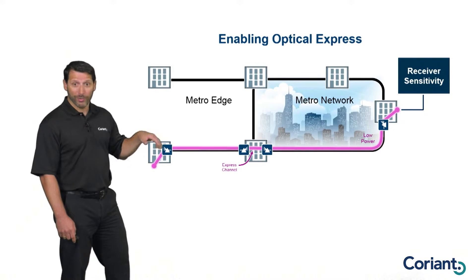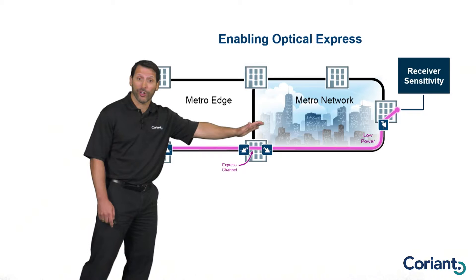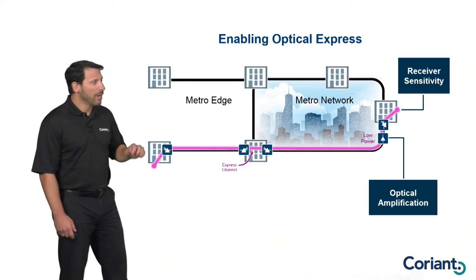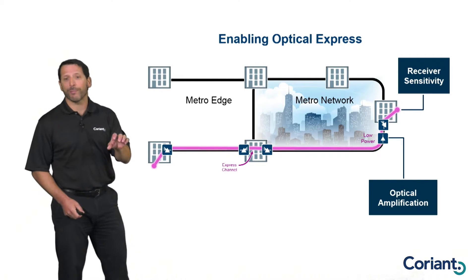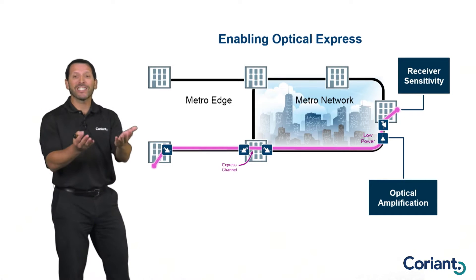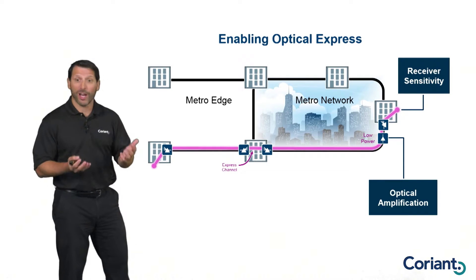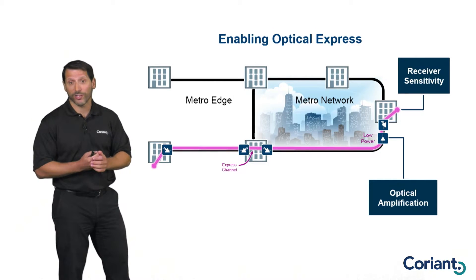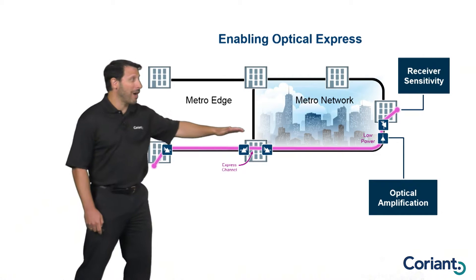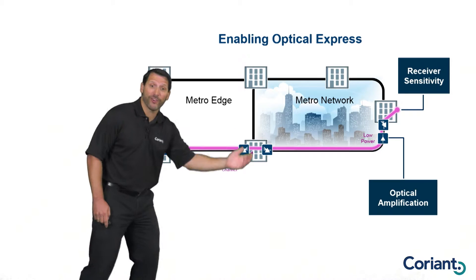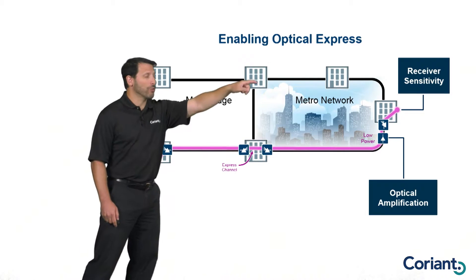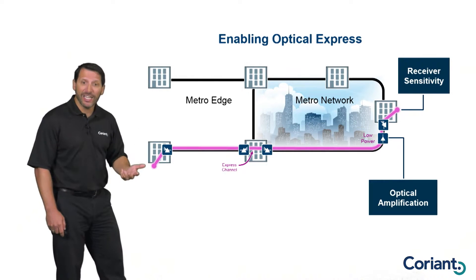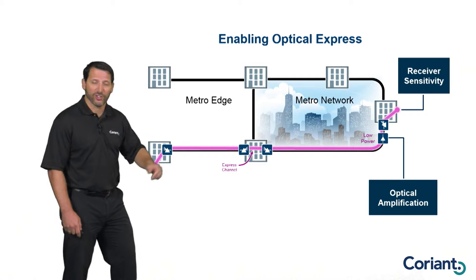One way to overcome this challenge and enable signals to transmit further across the network and optically express through more locations is a technique called optical amplification. Optical amplifiers take in all the optical signals on a fiber and amplify — increase the power level of those signals — purely optically in the optical domain, with no electrical regeneration or termination. They amplify all the channels on that fiber together. So you can go a very long distance, install one of these optical amplifiers, and it'll raise the power level back up above the receiver sensitivity level. This is a really effective technique for enabling optical express over much longer distances and larger networks.